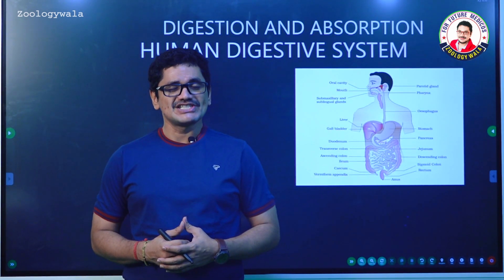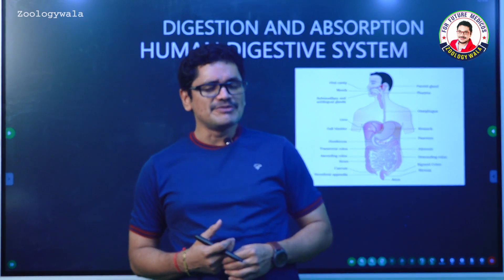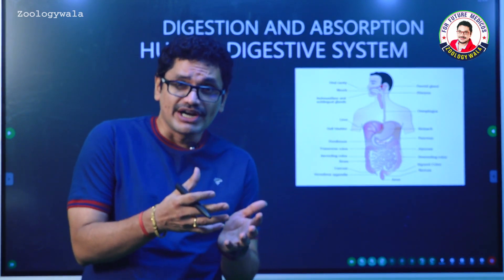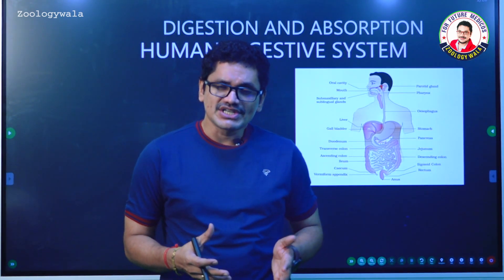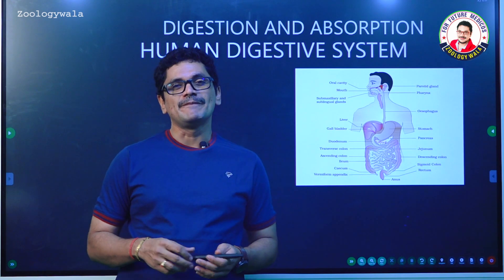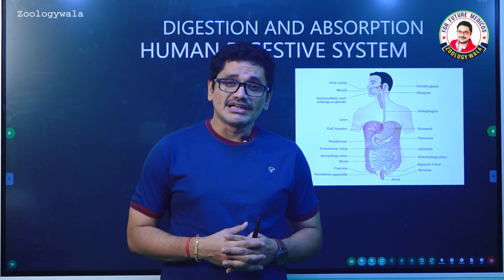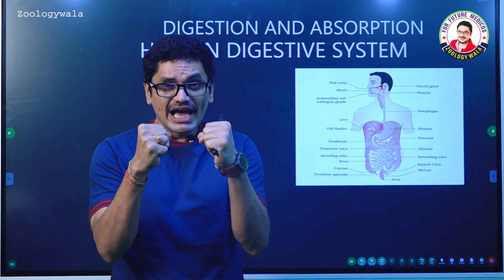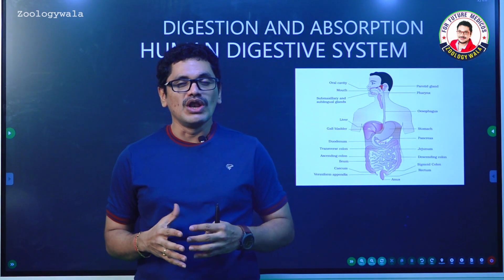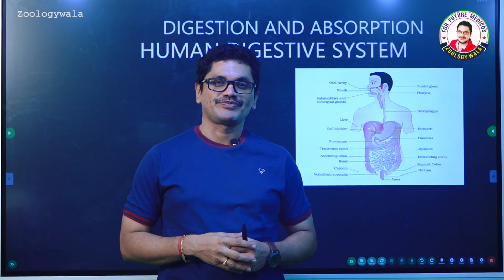What is digestion? We generally take different types of food materials which contain carbohydrates, proteins, fats, vitamins, minerals, water, and so on. These are the different components present in food. Food material is essential to give energy, and the organic components in food also play an important role in the growth of the body and repair of tissues.